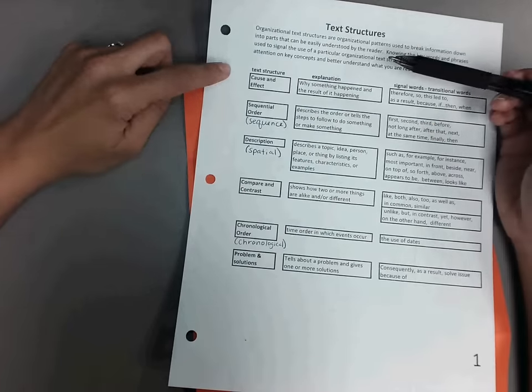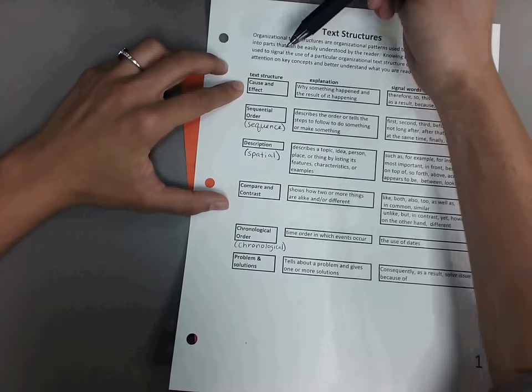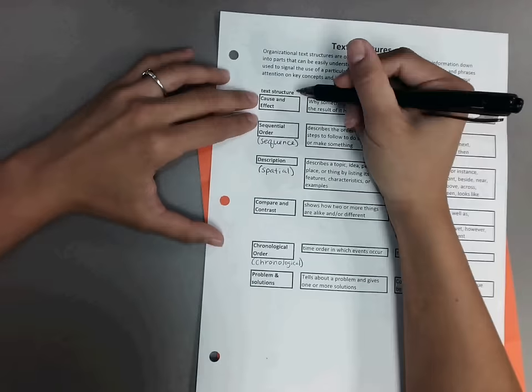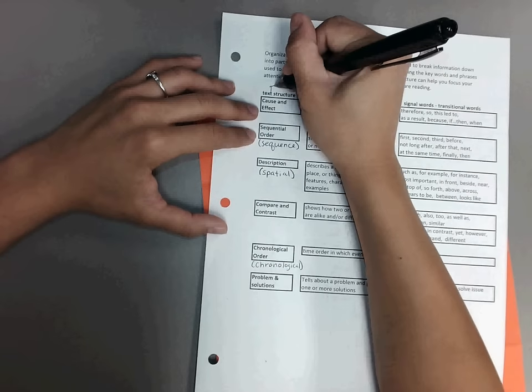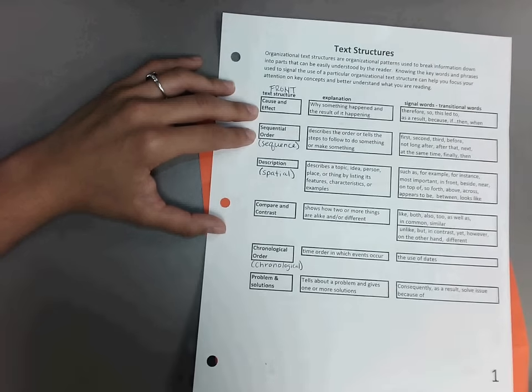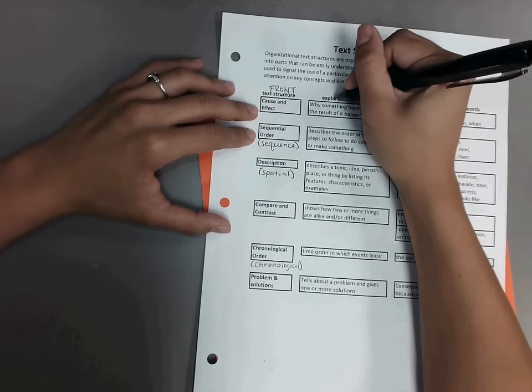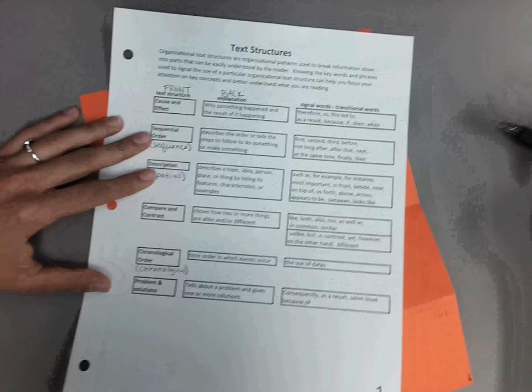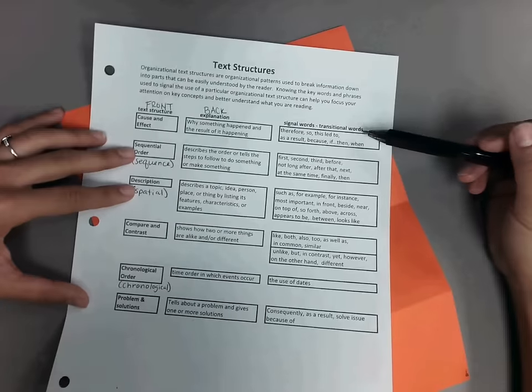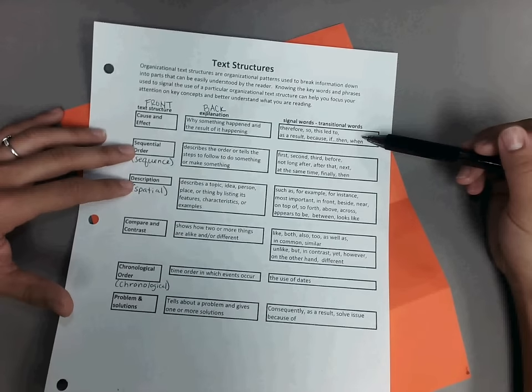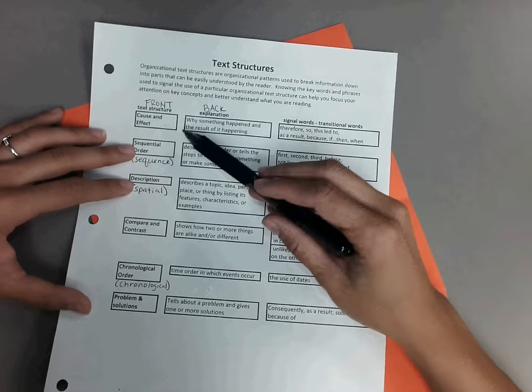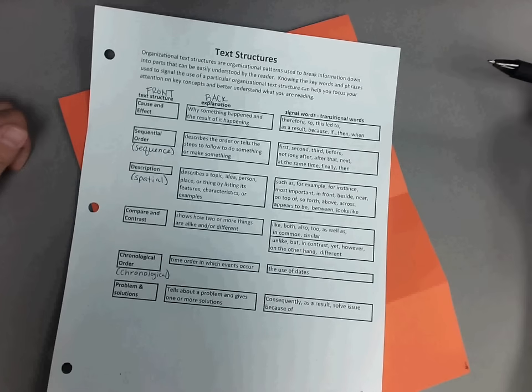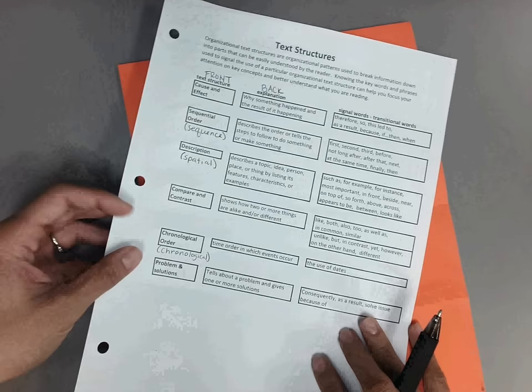Okay, the next thing we have is our explanations for each text structure. These are our definitions. So this text structure is going to go on the front of our note card, and on the back is going to be our explanation. On the back of your note card, you can also put the signal words or transitional words. These transitional words will help you figure out what text structure it is. However, you are not required to write all the signal words on your note card. You could just write three or four of them.